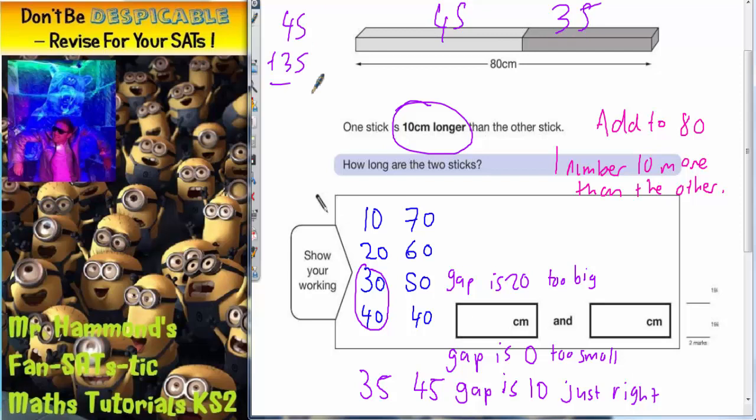45 plus 35. 5 plus 5 is 10. Carry the 1. 4 plus 3 plus 1 is 8. So it does indeed make 80, so that looks like it works.